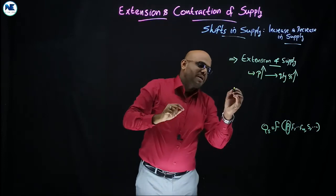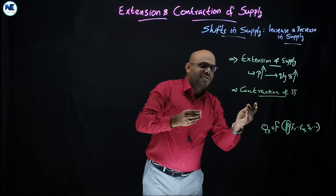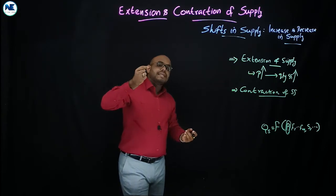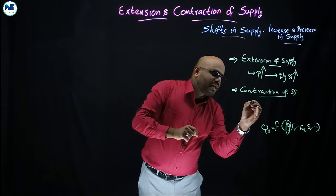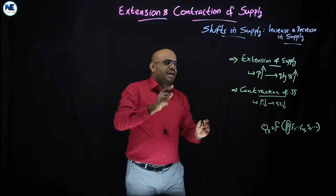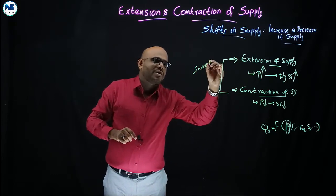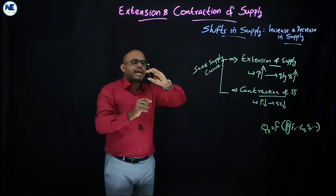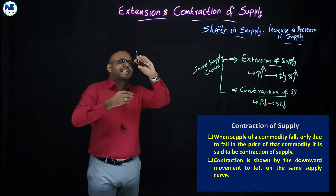Contraction of supply means a fall in the level of quantity supplied. When price decreases, quantity supplied also decreases. There is a positive and direct relationship between price of the commodity and quantity supplied. Contraction of supply happens when price decreases and quantity supplied also decreases — but please note, this happens on the same supply curve. There is no shift in the supply curve.